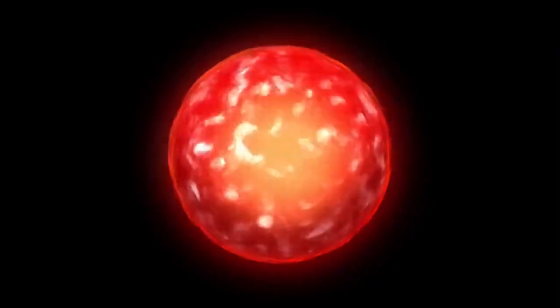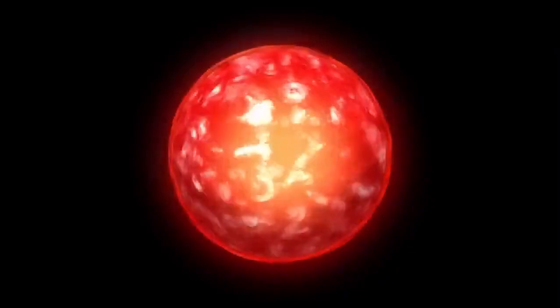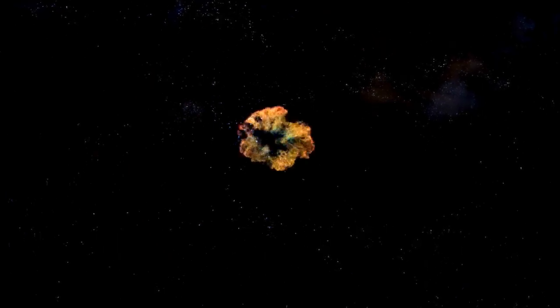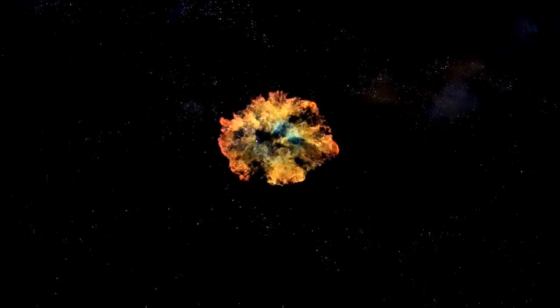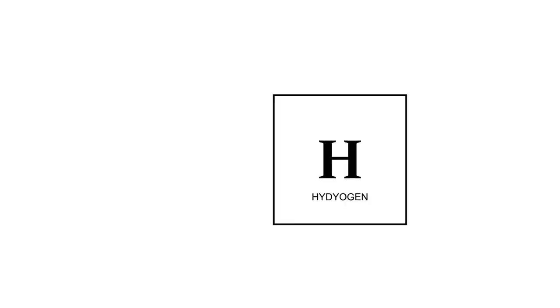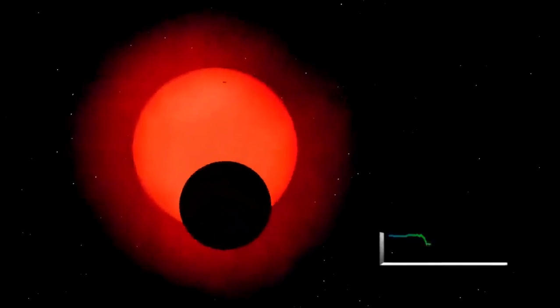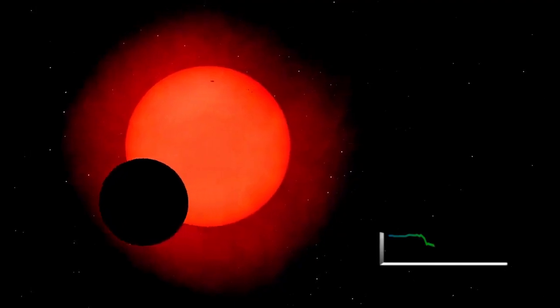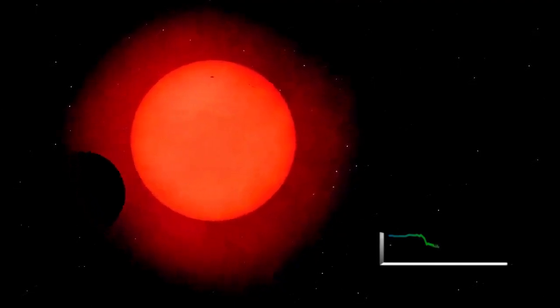In the case of Betelgeuse, a red supergiant nearing the end of its life cycle, this balance has become increasingly unstable. As the star depletes its core hydrogen fuel, the nuclear fusion processes that sustain it undergo significant changes. When hydrogen fusion slows in the core, radiation pressure decreases, causing the gravitational pull to momentarily gain the upper hand. This results in the contraction of the star's outer layers.